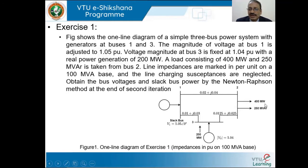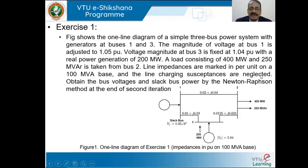A load of 400 megawatt and 250 MVAR is connected to bus 2, which draws 400 megawatt active power and 250 megawatt-ampere reactive power. Line impedances are marked in per unit: line 1–2 has impedance 0.02 + j0.04, line 1–3 has 0.01 + j0.03, and line 2–3 has 0.0125 + j0.025 per unit. Line charging susceptances are neglected. We are asked to find bus voltages and slack bus power by the Newton-Raphson method at the end of the second iteration.